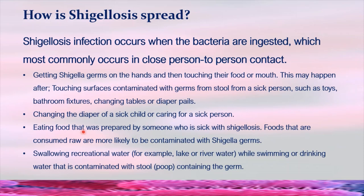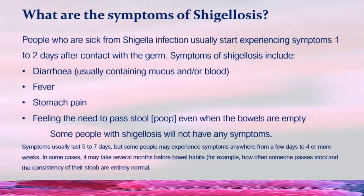Eating food prepared by someone who is sick with Shigellosis can also spread the infection. Foods that are consumed raw are more likely to be contaminated with Shigella germs. Swallowing recreational water — for example, lake or river water while swimming — or drinking water contaminated with stool containing the germ can also cause Shigellosis.